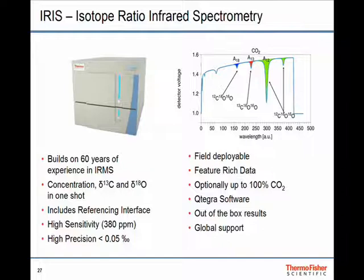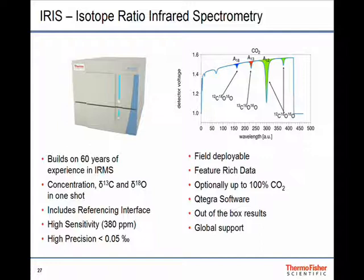Summarizing, we build on 60 years of experience with IRMS. You get concentration, 13C and 18O in one shot. You include the reference interface to give you long-term stability. It works very well at 380 ppm. You can get 0.05 per mil precision. It's field deployable. You get these feature-rich data sets that tell you a lot about your experiments. We have software that I didn't talk much about. You get out-of-the-box results. You set it up and start measuring right away.